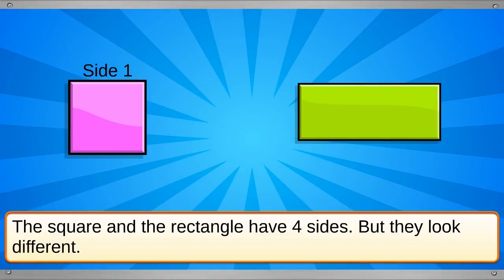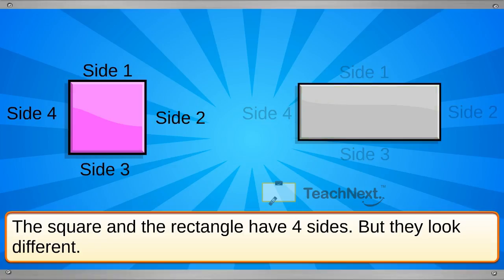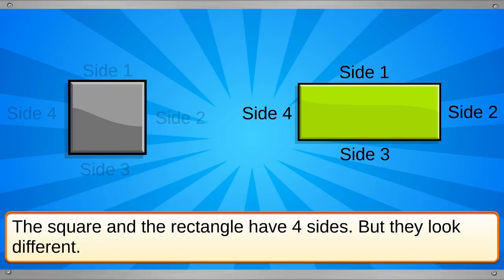The square and the rectangle have four sides, but they look different. Can you see why? All the sides of the square are the same, but the sides of a rectangle are not.